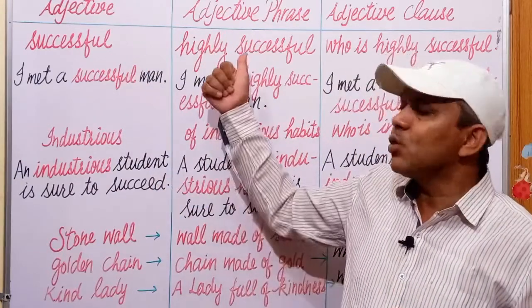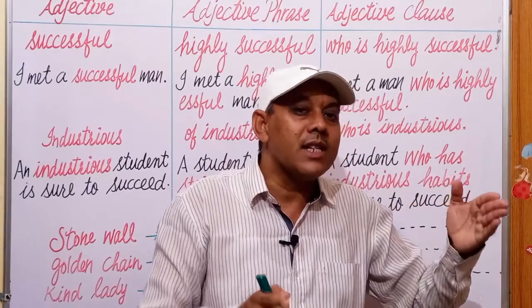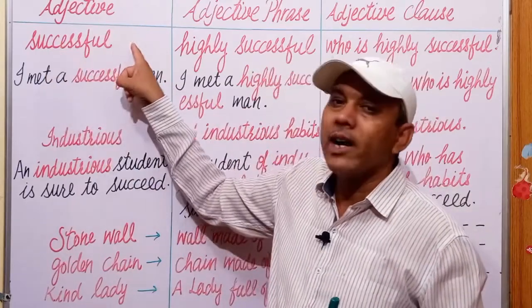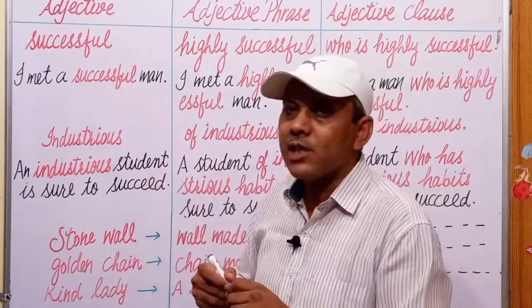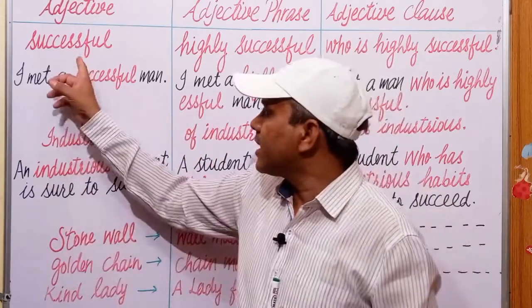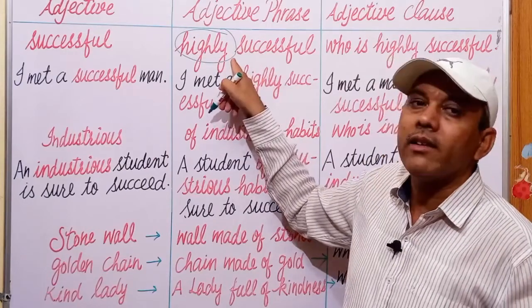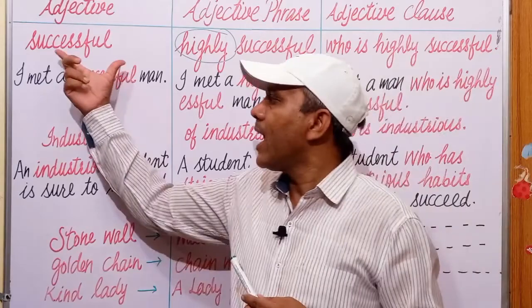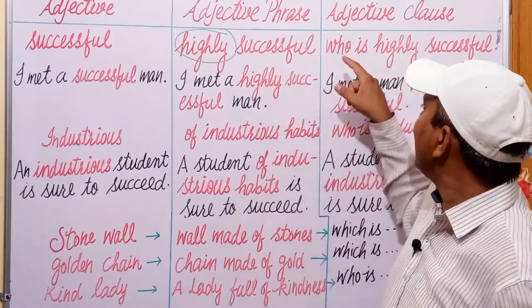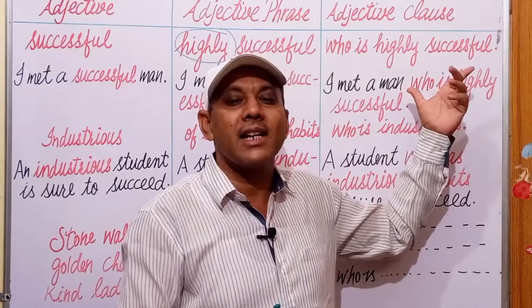Now let us see how to change an adjective word into an adjective phrase and how to change an adjective phrase into an adjective clause. For example, we take the adjective 'successful' — 'He is a successful person,' 'He is a successful businessman.' A single word acting as an adjective. A group of words acting as an adjective in a sentence is an adjective phrase, and a group of words having a subject and finite verb of its own, acting as an adjective, is an adjective clause.